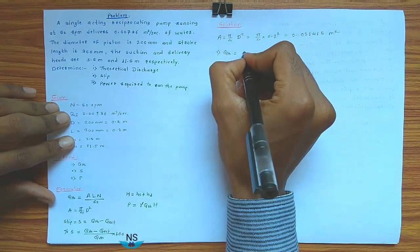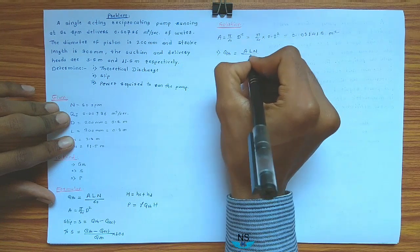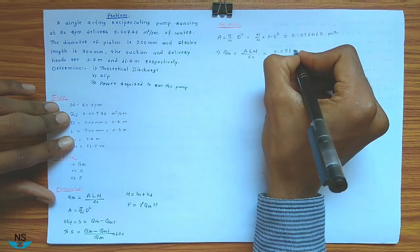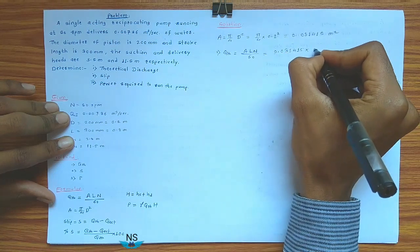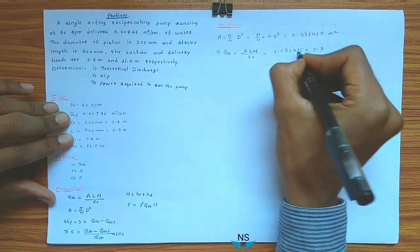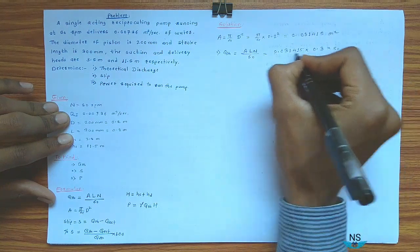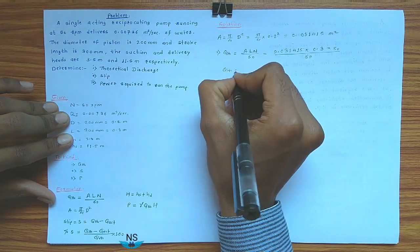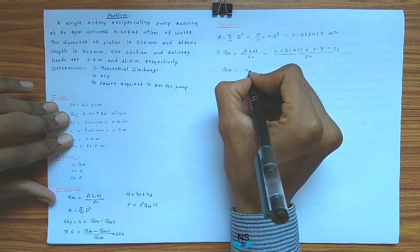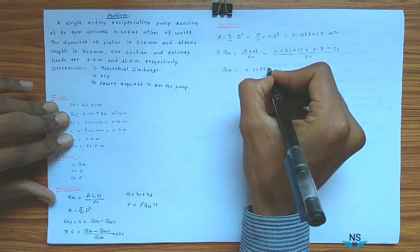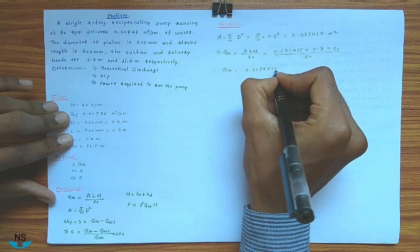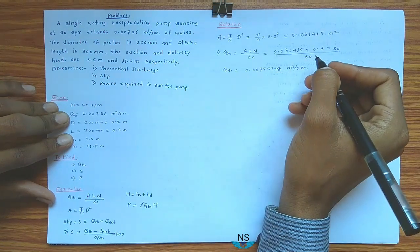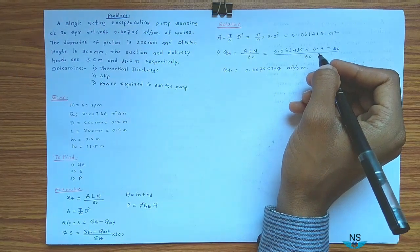Then, theoretical discharge: Q_theoretical is equal to A × L × n divided by 60, that is equal to 0.031415 into 0.3 into 50 divided by 60. So Q_theoretical is equal to 0.00785398 m³ per second.